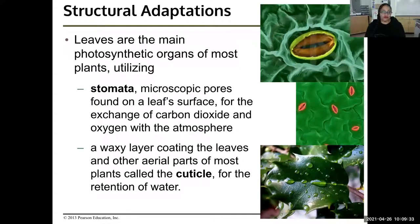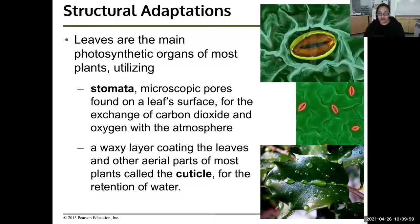Some more structural adaptations. Leaves are the main photosynthetic organs of most plants. If you look at them under the microscope, they look like they have tiny little lips — and those tiny little lips are called stomata. They are microscopic pores found on the leaf surface for the exchange of carbon dioxide and oxygen with the atmosphere. Leaves also have a waxy coating called the cuticle, which is for the retention of water.